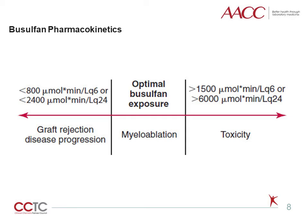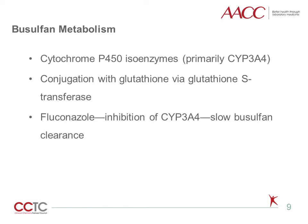The optimal range of the therapeutic area under the plasma concentration versus time curve (AUC) for standard doses of Busulfan is 900 to 1350 micromolar·minutes per liter. Patients with Busulfan concentrations below the therapeutic range are thought to have increased risk of relapse as well as rejection. Conversely, patients with plasma concentrations greater than 1500 micromolar·minutes per liter have an increased risk of severe treatment-related toxicity. Busulfan is metabolized through cytochrome P450 isoenzymes, primarily CYP3A4, and conjugation with glutathione by glutathione S-transferase. Slowed Busulfan clearance could be anticipated with co-administration of a CYP3A4 inhibitor or a competitive substrate.